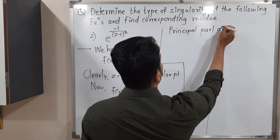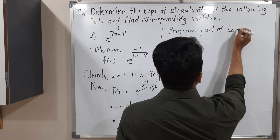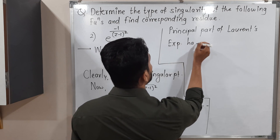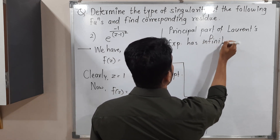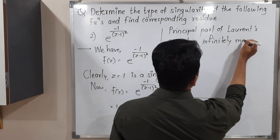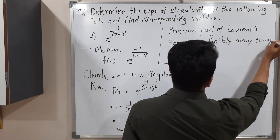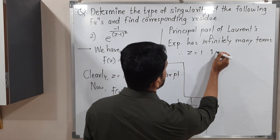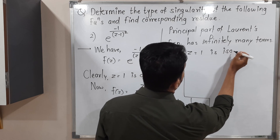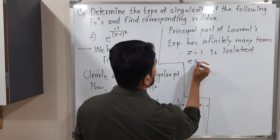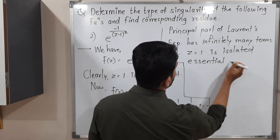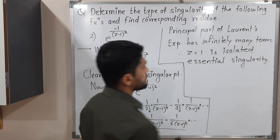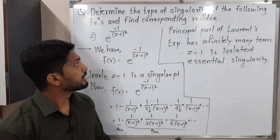The principal part of the Laurent expansion has infinitely many terms. Therefore, the singular point z = 1 is an isolated essential singularity. Some people call it simply an essential singularity, but more precisely it is an isolated essential singularity.